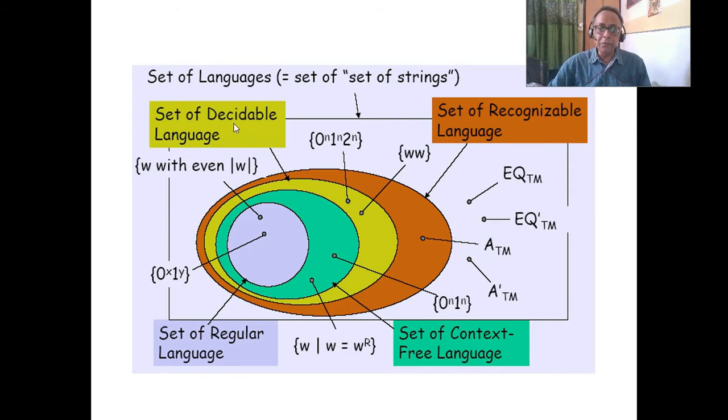It is recognizable, or in some books recursively enumerable language, and this is recursive. Some books call it recursively enumerable. As per Sipser, follow Sipser's book.